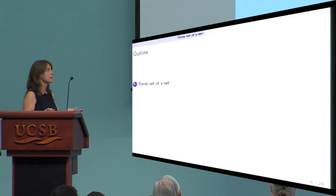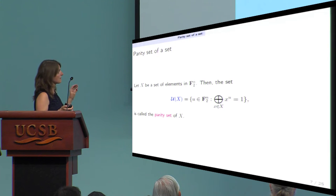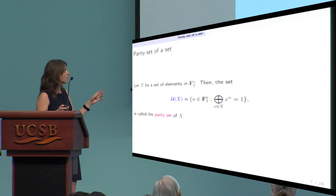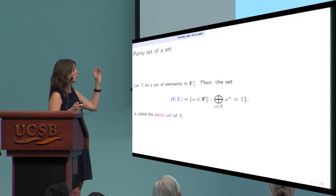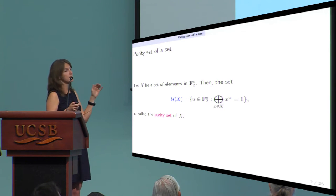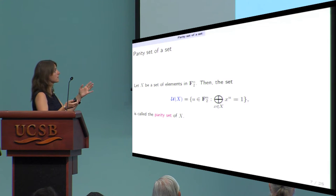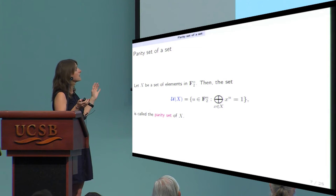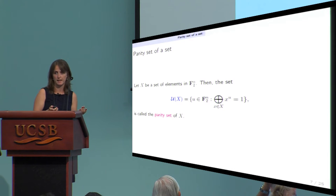What is a parity set? The notion is simple: it is exactly the set composed of all exponents u such that the sum over all elements x of the monomial x^u equals 1. Since this sum can only be 0 or 1, you collect all exponents that make the sum equal to 1 into the parity set of X.